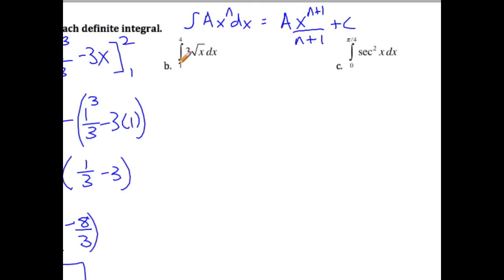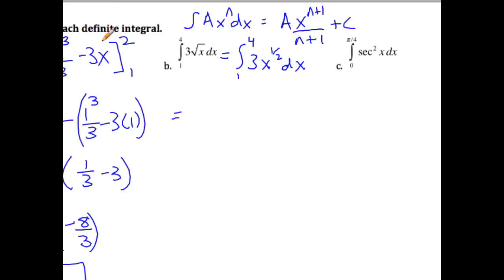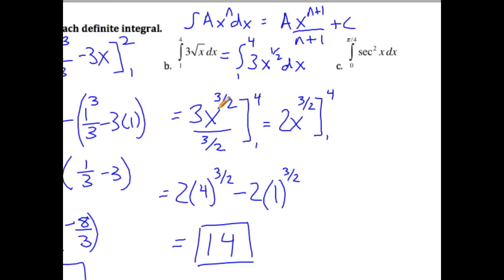Moving on to part B: we have the definite integral from 1 to 4 of 3√x dx. Before taking the antiderivative, rewrite this in power form as the integral from 1 to 4 of 3x^(1/2) dx. The antiderivative is 3x^(3/2) / (3/2), which simplifies by multiplying by the reciprocal to give 2x^(3/2), evaluated from 1 to 4. Plugging in 4 and then 1 and subtracting, we get 14.